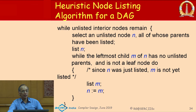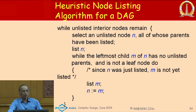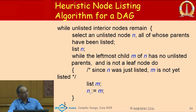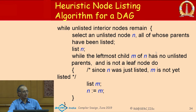After listing a node N, you take its leftmost child M that has no unlisted parents. If M is not a leaf node, you list M and go depth-first further down. If no child satisfies the condition — because their other parents have not yet been listed — you go breadth-first to the next sibling. You continue this process: depth-first when possible, breadth-first otherwise.